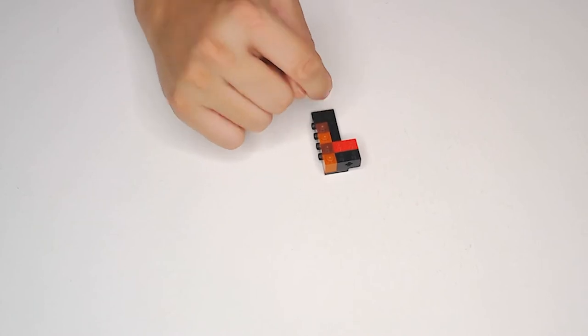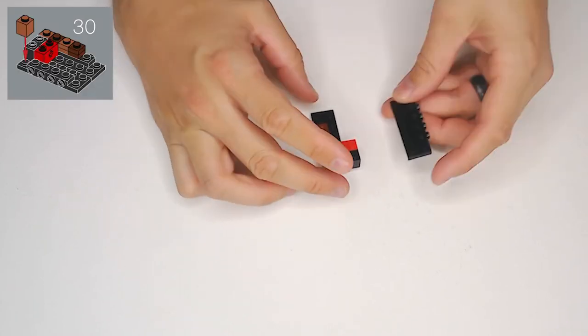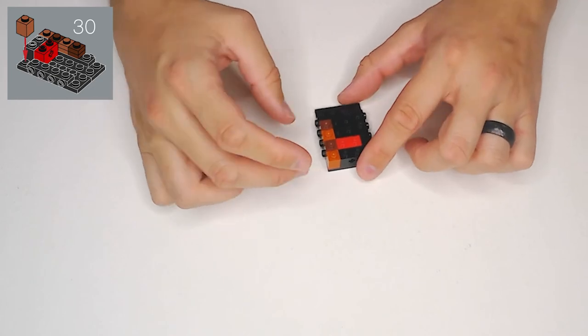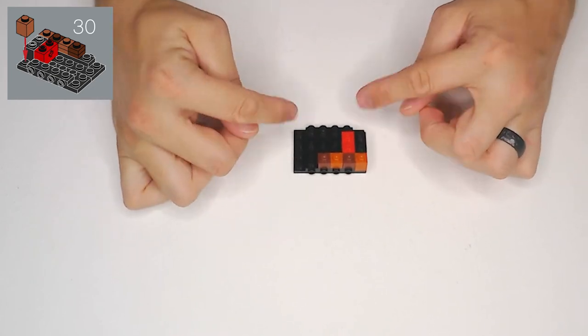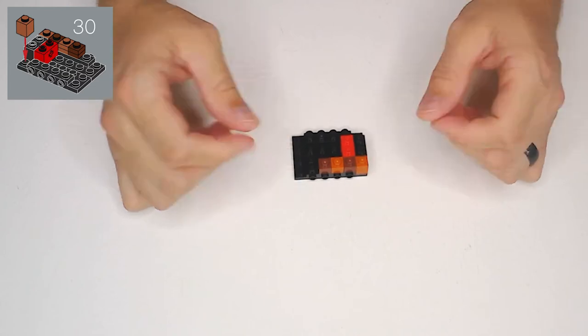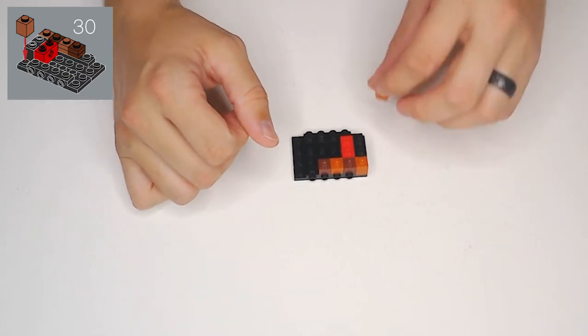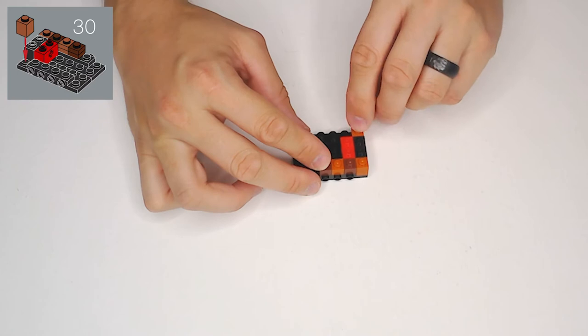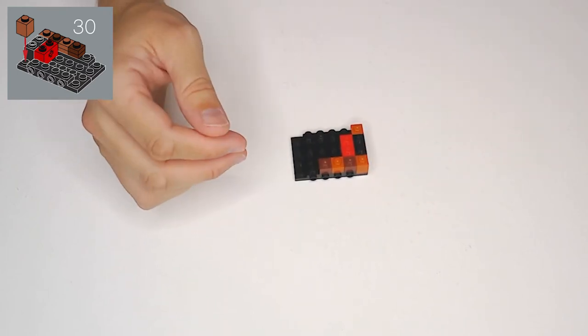And then in step 30, we want another one of the same black 2x6 plates, with the embedded 1x4 and side-facing studs. And that's going to go on the mirror, like that. And then we also want a light brown 1x1 block to go along the end, just like on the other side. And that's step 30.